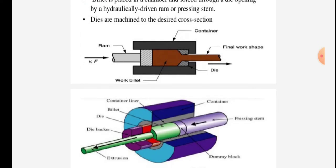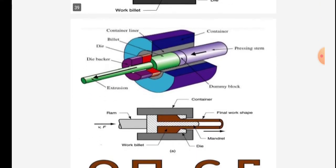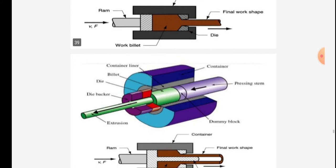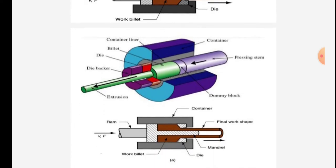The RAM is given with velocity V and force F. The final work shape is as shown in figure. Components include container, container liner, plate, die, die backer. The cross-sectional area of the process, pressing stem, and dummy block are given.